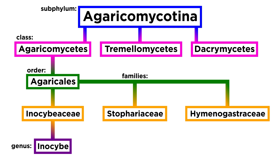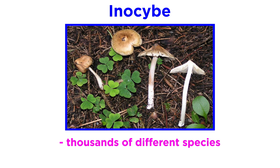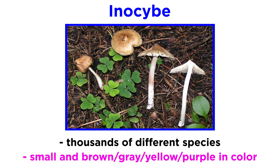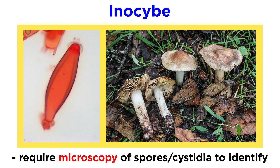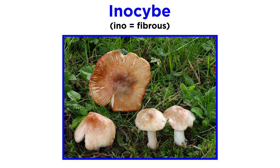First, we will discuss the genus Inocybe, which has its own family, Inocybaceae. Inocybe is a large genus consisting of thousands of different species of small brown, grey, or yellowish mushrooms, with some purple exceptions. Generally, these mushrooms require microscopy of spores and cystidia to identify to the species level, so we will focus on the general characteristics of the entire genus. The Greek root 'ino' from Inocybe means fibrous, which references the lacerated or fibrous pattern that appears on many of the species' caps.